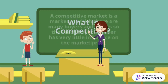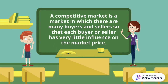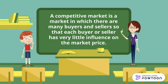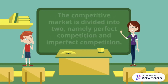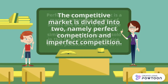And what is competition? A competitive market is a market in which there are many buyers and sellers, so that each buyer or seller has very little influence on the market price. The competitive market is divided into two types: perfect competition and imperfect competition.